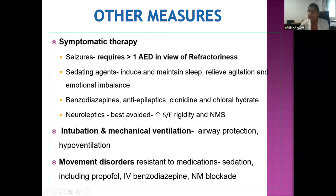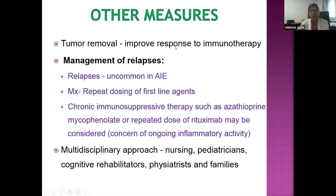Symptomatic therapy is equally important. Seizures are common and refractory, requiring more than one anti-epileptic drug, sedating agents like benzodiazepines, clonidine, or chloral hydrate. Do not give neuroleptics like haloperidol as they increase rigidity and risk of neuroleptic malignant syndrome. Intubation and mechanical ventilation may be required for hypoventilation. Movement disorders resistant to medications require IV sedation with propofol or midazolam, or neuromuscular blockade. If a tumor is present, removal improves response to immunotherapy. For relapses, repeat first-line agents; if no response, escalate to second-line. Patients with multiple relapses may benefit from chronic immunosuppression with azathioprine or mycophenolate.